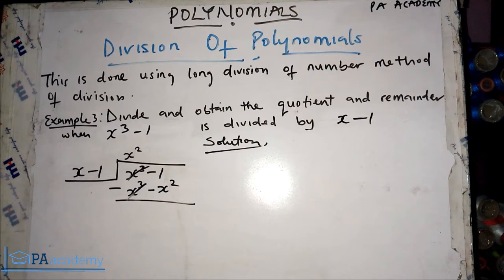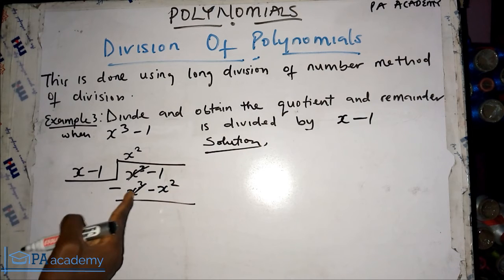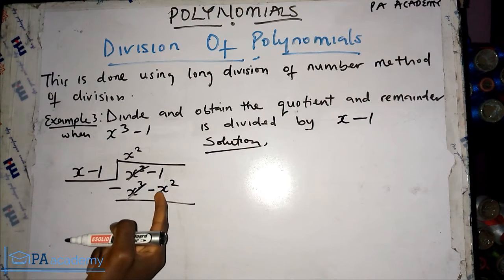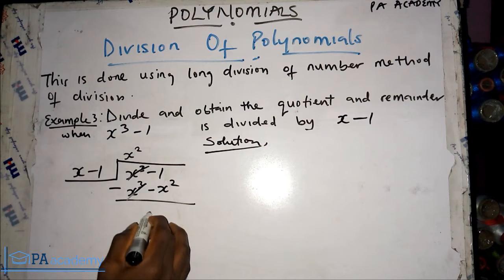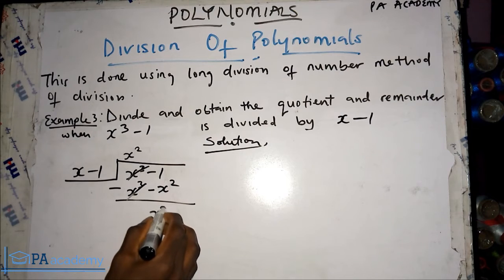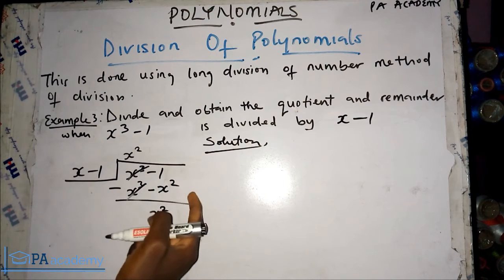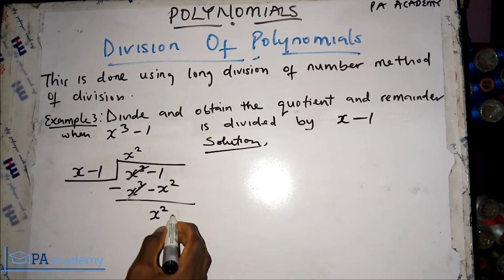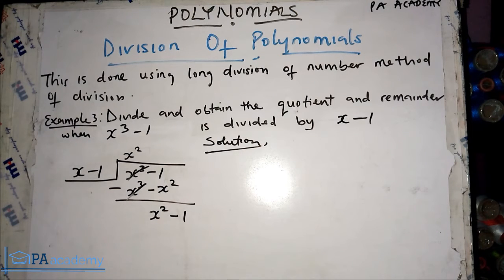By subtracting, x³ minus x³ cancels to zero. We're left with the term of the next highest degree: minus minus x², which gives us plus x². The constant minus 1 has nothing to subtract from, so it remains as minus 1. We bring that back down.